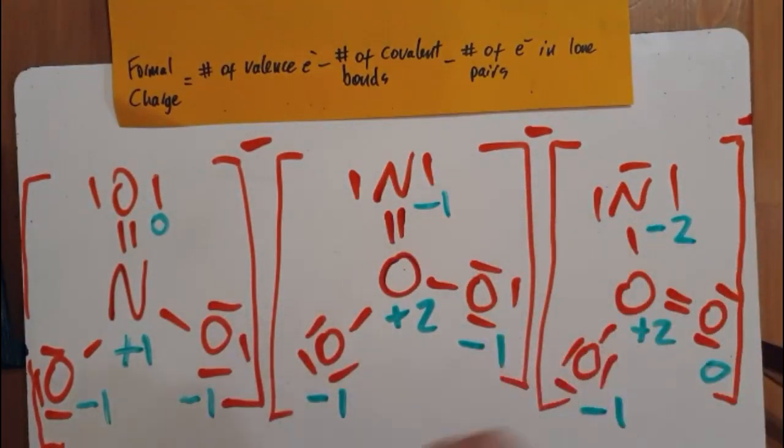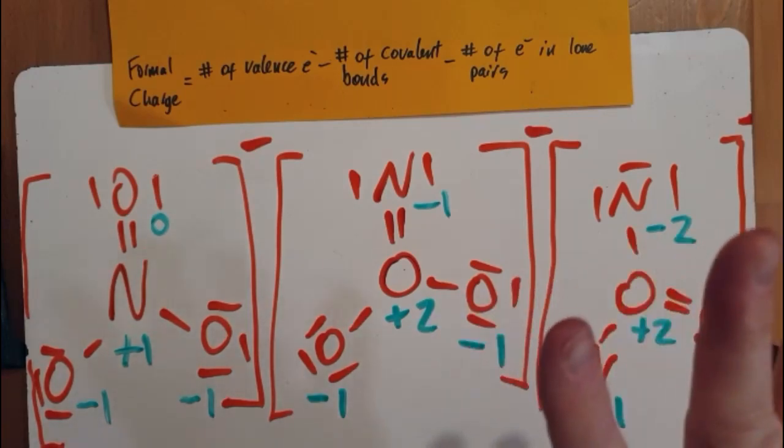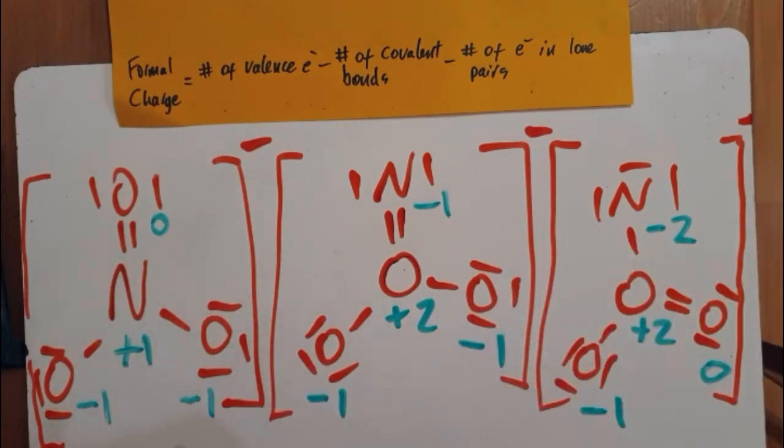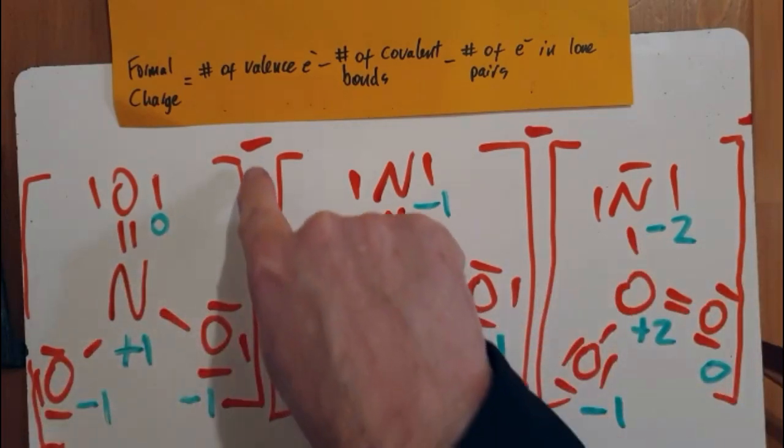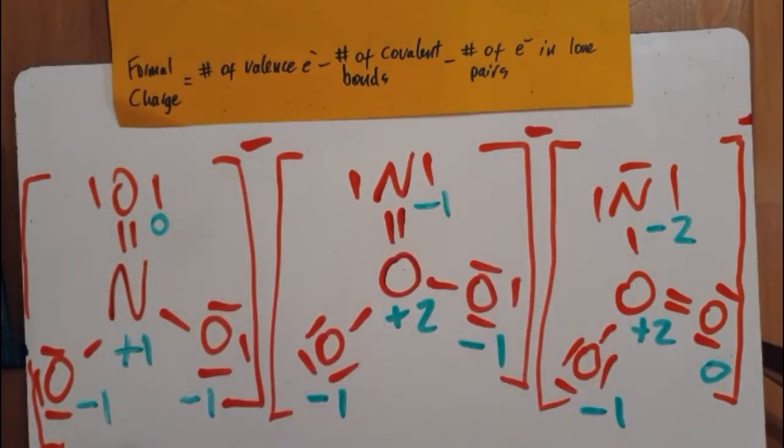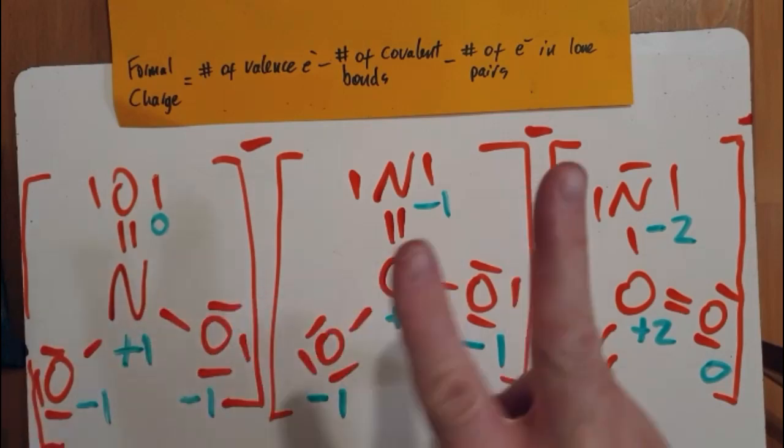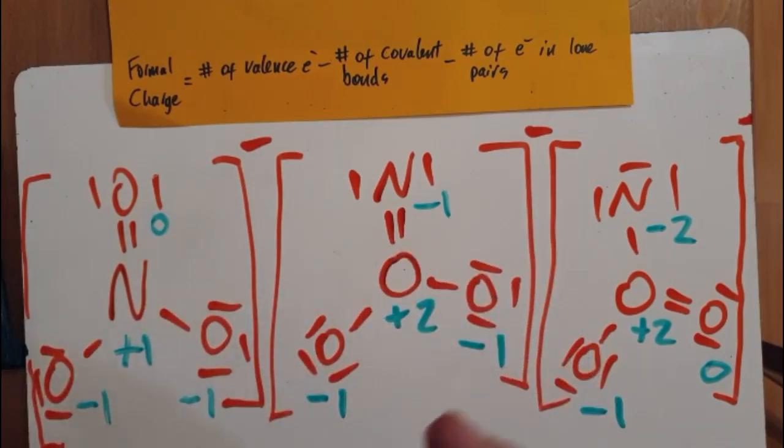All right, so I put the formal charges on. So the preferred Lewis structure is the one where all the formal charges are zero. Now that's never going to be the case for here, because the formal charges add up to the charge on the ion. Let's just make sure. Yeah, that's what they do. So the one that's going to win here is the one that has the most zeros. Well, it comes down to this one and that one when we're looking at zeros. All right, so this one's out.